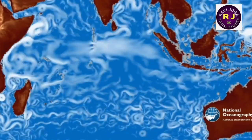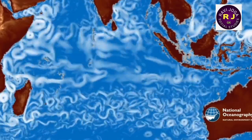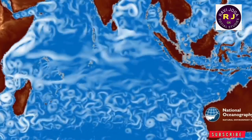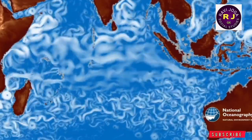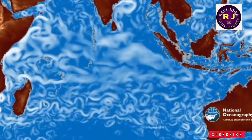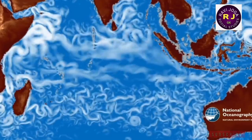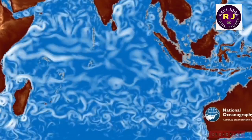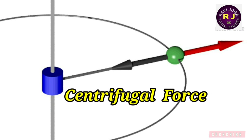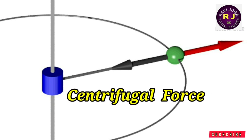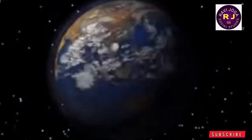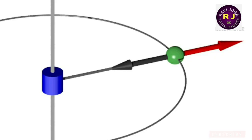Ocean currents are caused by several factors: centrifugal force, the effect of winds, precipitation, and solar energy. The centrifugal force at the equator is greater than at the poles. During revolution, the great circles coincide with the equator, and the variation of these forces helps equatorial water to move towards the poles.